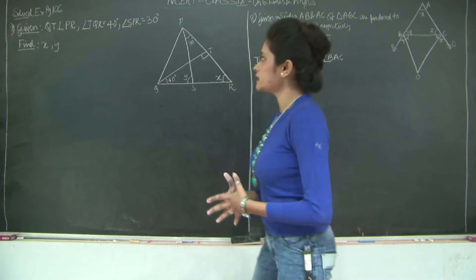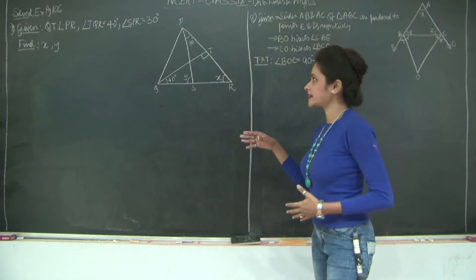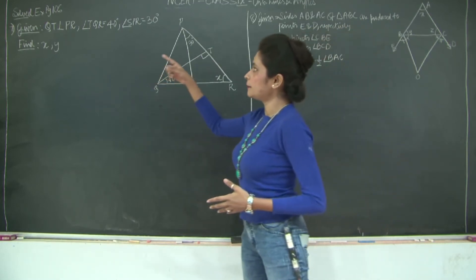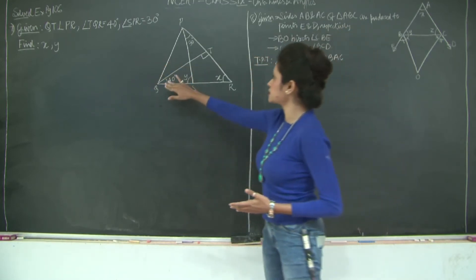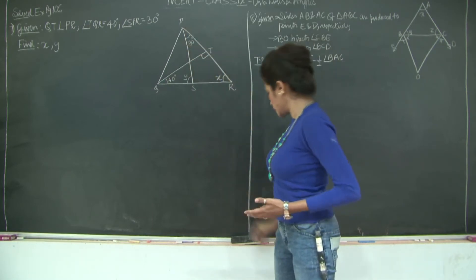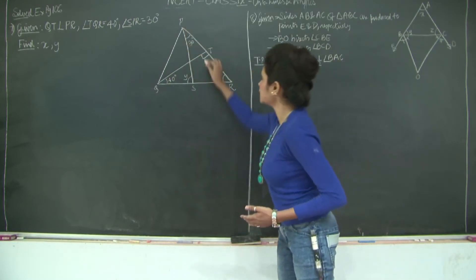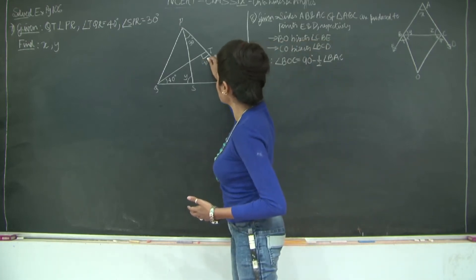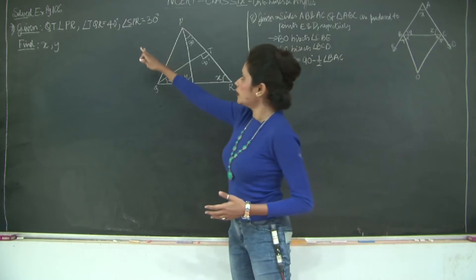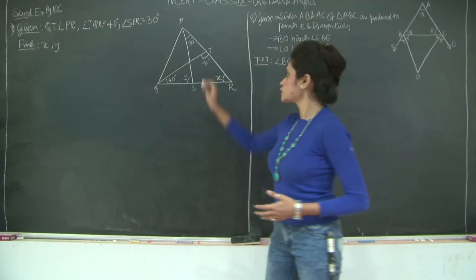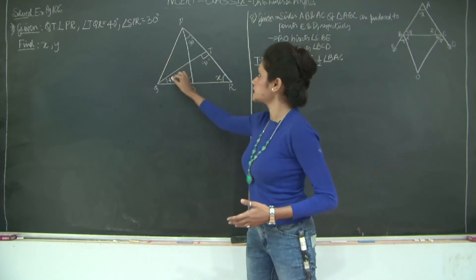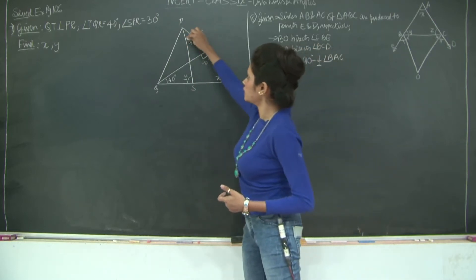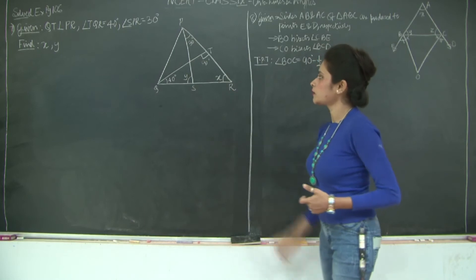For the first example, we need to find the values of X and Y from the given figure. We have QT perpendicular to PR, so this angle here is 90 degrees. Angle TQR is 40 degrees and angle SPR is 30 degrees. We need to find the values of X and Y.